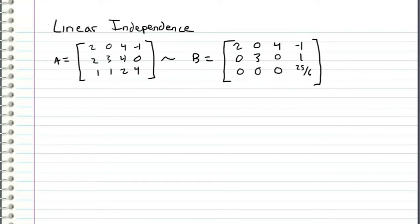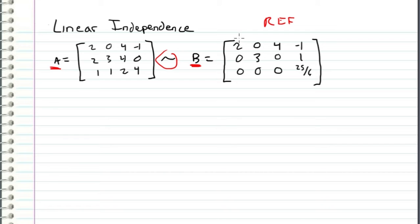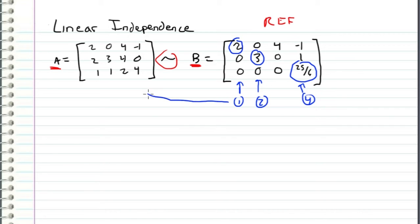It's not always practical to check every single vector to tell whether it's a combination of the other vectors. Instead, what we do is row reduce a matrix into echelon form and then select the pivot columns as the linearly independent set. Going back to an example from a previous video, matrix A is row equivalent to matrix B, which is the row echelon form of A. The pivots lie in columns 1, 2, and 4, so we select those columns from the original matrix as the linearly independent set.